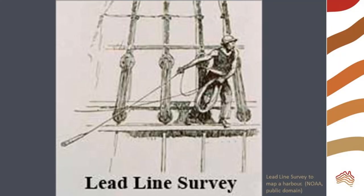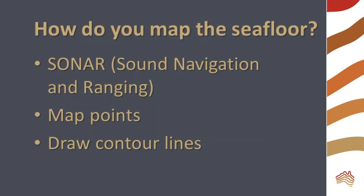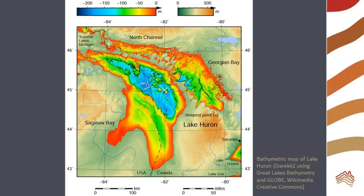People mapped lakes and harbors using ropes weighted by lead or long poles that were basically big rulers. However, mapping the depths of the ocean required more advanced technology. The invention of sonar allowed more convenient mapping. Sound waves bounced off the ocean floor were used to calculate the depth and draw contour lines to create maps.